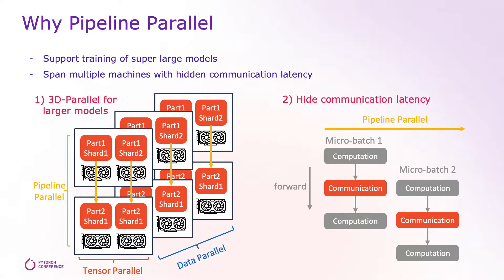Why do we need Pipeline Parallel? First, it is essential to the training of super-large models, including large language models which cannot fit into a single GPU. Second, it can hide high communication latency. For example, while micro-batch 1 is going through the communication phase, micro-batch 2 can start running on the device with computation, hence increasing the device utilization.